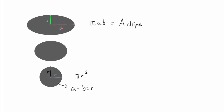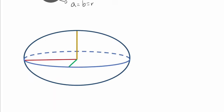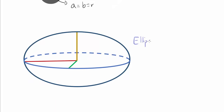In this video, we are going to prove that the area of an ellipse is π times a times b by thinking about a transformation that squishes the ellipse into a circle. After we prove that, we are also going to show that the volume of an ellipsoid — a three-dimensional analog of an ellipse with semi-principal axes a, b, and c — is four-thirds times a times b times c.